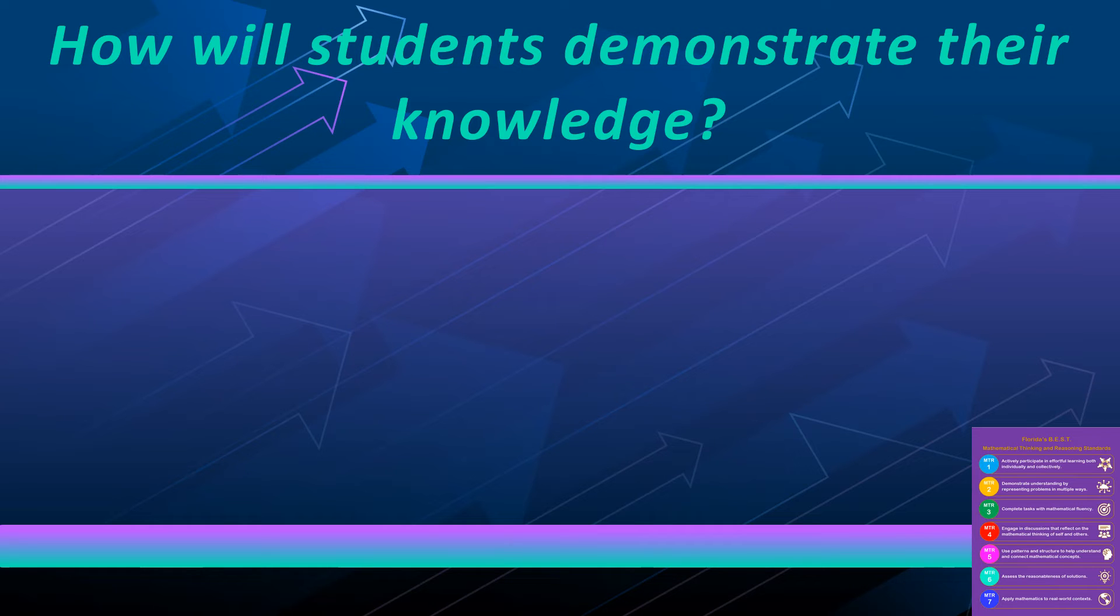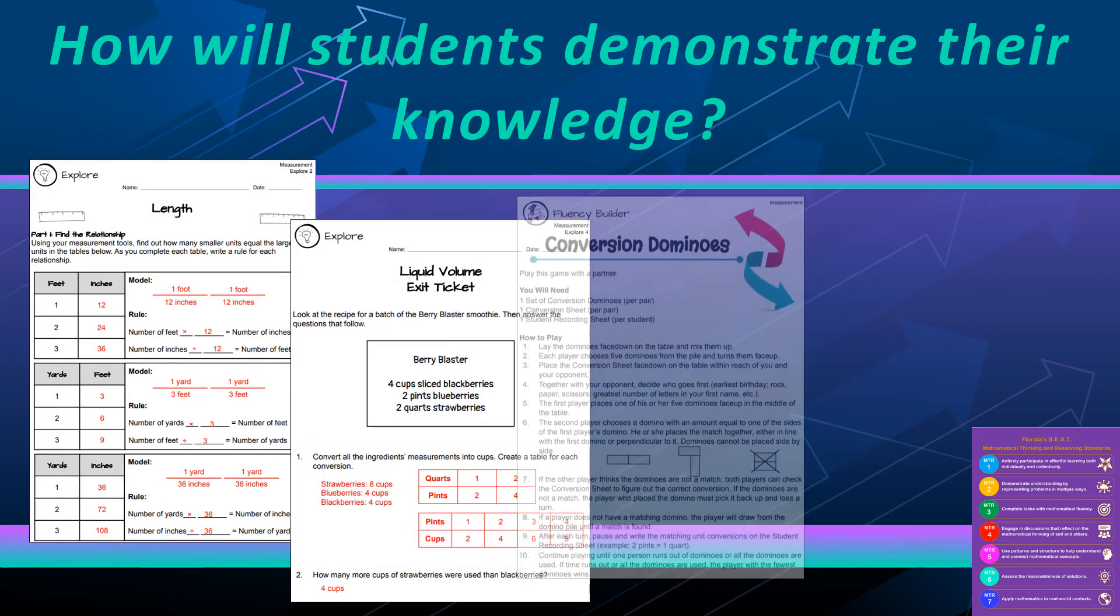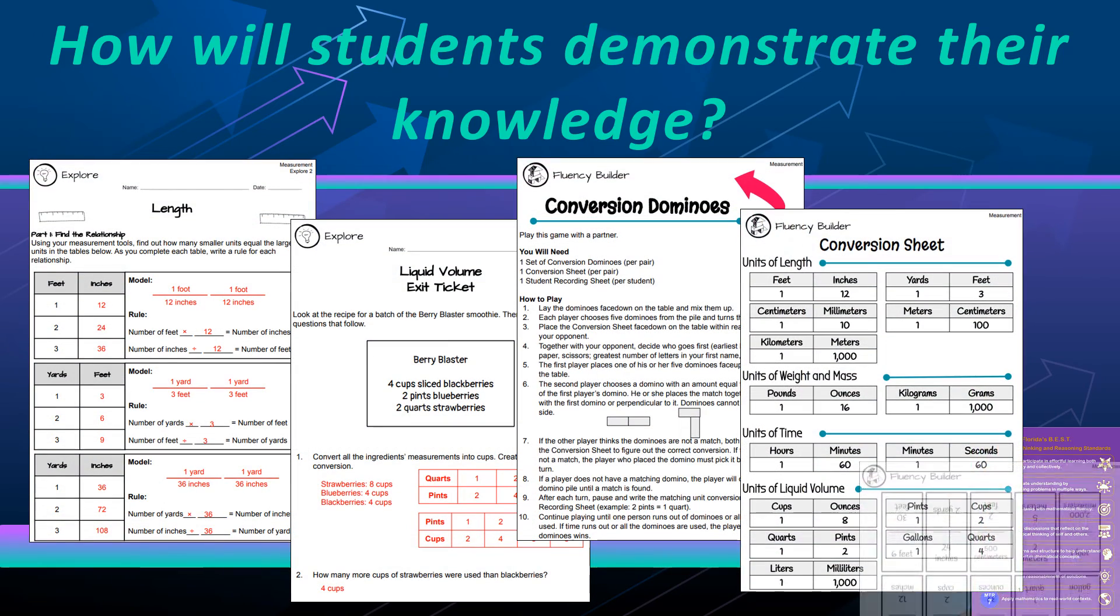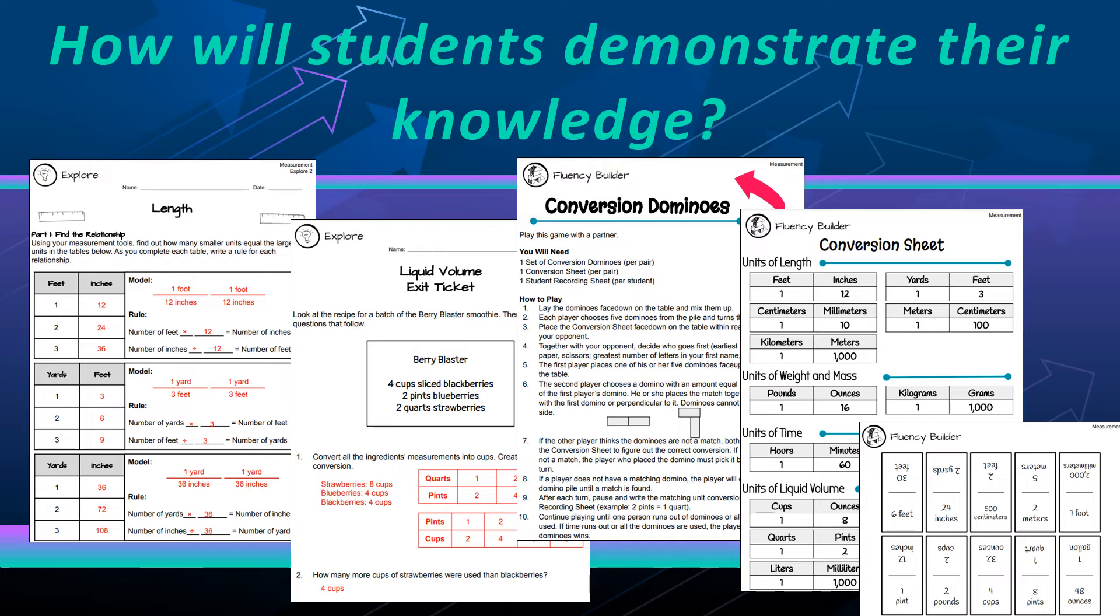How will students demonstrate their knowledge? Here are some examples from STEM scopes. You might see the first one from an Explorer with length and where they're using tables, pictures, equations to really look at those conversions. Same thing with the second Explorer. We have liquid volume, same strategies. And then you might even see a fluency builder game like conversion dominoes where they're actually using dominoes to match equivalent amounts and using what they know about converting to prove those matches.